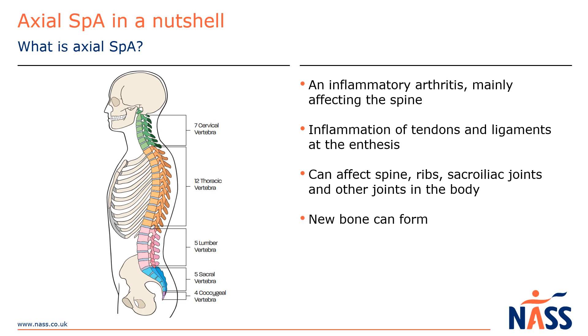For some people with axial SpA who have prolonged inflammation, the body tries to repair this area by laying down new bone. Over a long period of time, this can lead to joints fusing, but this doesn't happen to everyone with axial SpA.